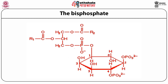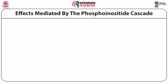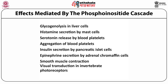PIP2 generally has arachidonate at the C2 position of glycerol. We have already learnt about the importance of this C20 PUFA as a precursor of icosanoids, prostaglandins and thromboxanes. The phosphoinositide cascade of signal transduction in fact mediates diverse metabolic processes. These are listed here. As you can see, this is as varied as glycogenolysis in liver cells to visual transduction in invertebrate photoreceptors.